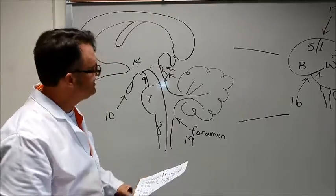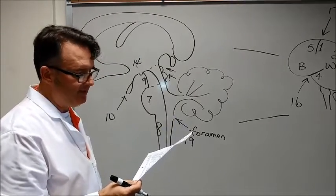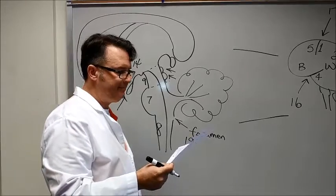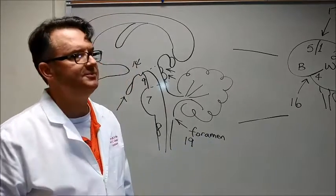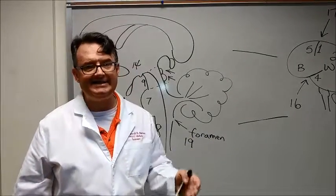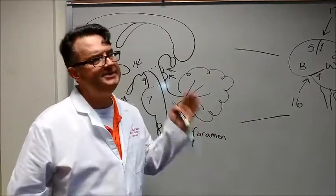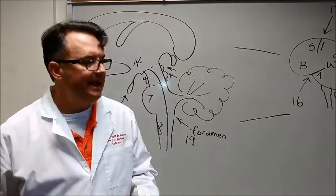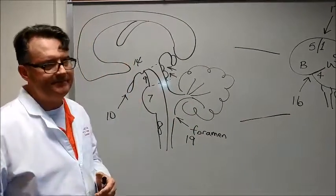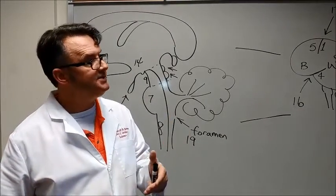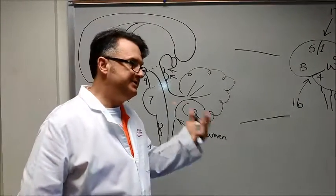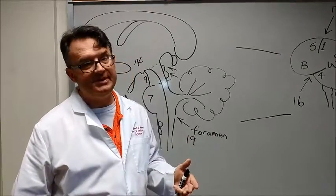The hypothalamus regulates autonomic, sleep, weight, thirst, hunger, body temperature, hormone production, controls pituitary secretions. I say hunger, anger, rage, aggression, sex drive. It monitors your body basically and if there are any corrections that need to be made it does so and that's what we call homeostasis.